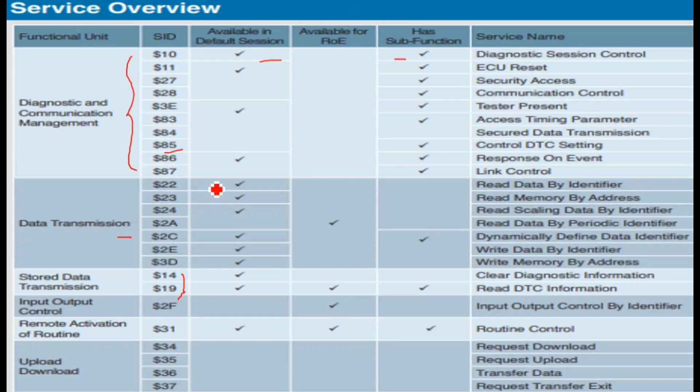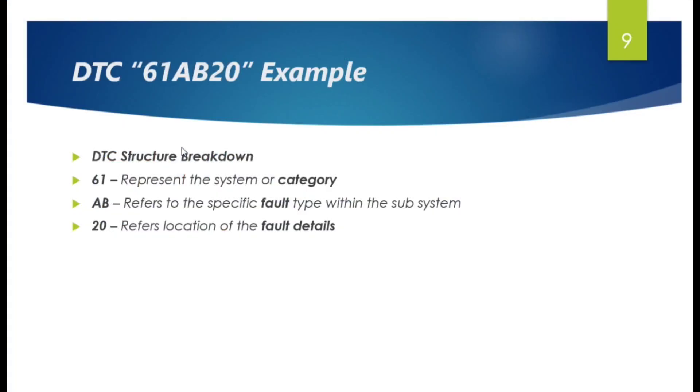You can use this for your revision. Sometimes in interviews they ask about service ID and their service name. For example, they'll say what is the service ID of Write Data by Identifier - you can say 0x2E. Or what is the service ID for Clear DTC - that is 0x14. Read DTC is 0x19, and Control DTC is 0x85.